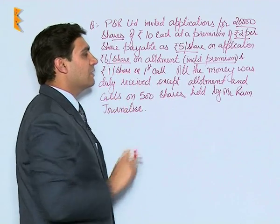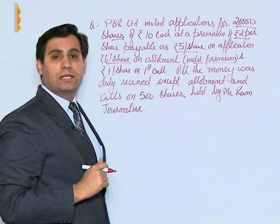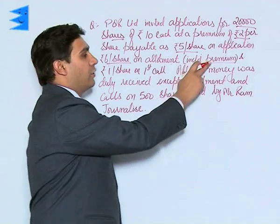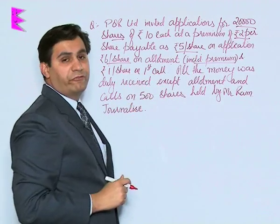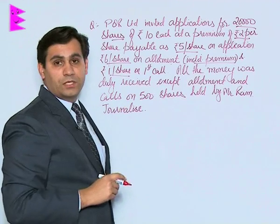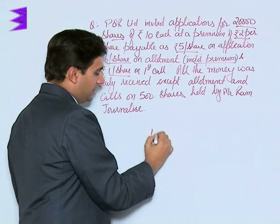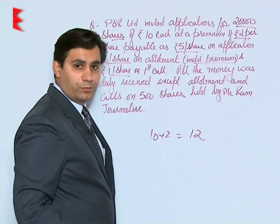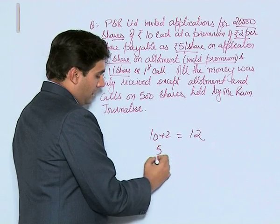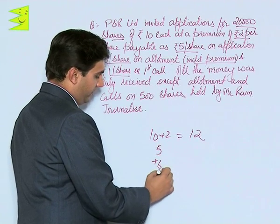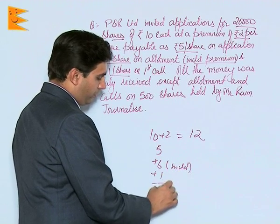In this Rs.6 called at the time of allotment, Rs.4 belongs to the capital, Rs.2 is securities premium, and Rs.1 per share is the first call. So the calculations are: Rs.10 per share at a premium of Rs.2 means the issue price is Rs.12. Application money is Rs.5, allotment is Rs.6, and first call is Rs.1 — including premium — so the total comes to Rs.12.